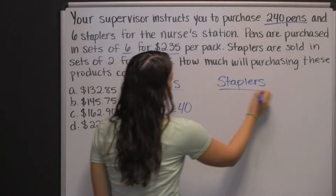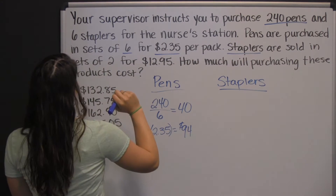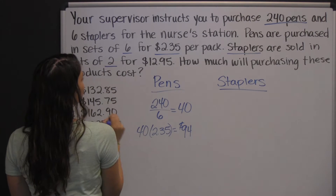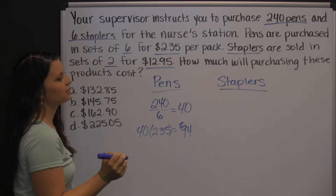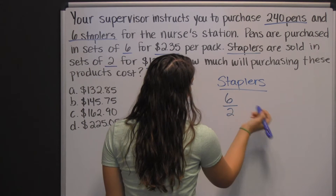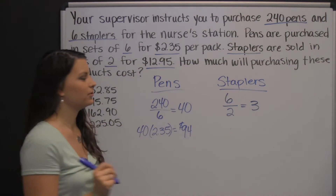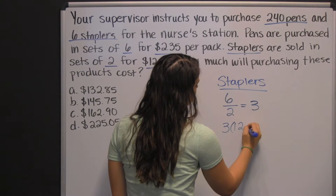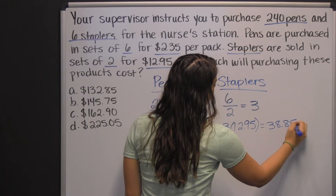Now let's move to staplers. The staplers are purchased in sets of 2 for $12.95, and we need 6 of them. So first we'll figure out how many packs we need to buy: 6 divided by 2 is 3. So we need to buy 3 sets of staplers, and each one of those costs $12.95. So, 3 times $12.95 is $38.85.